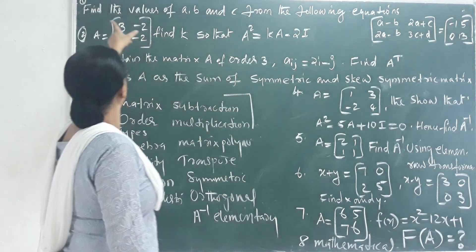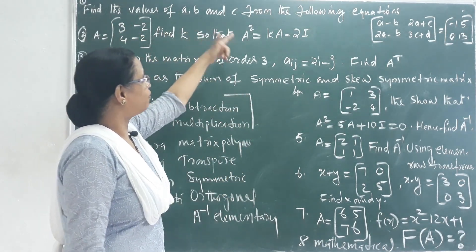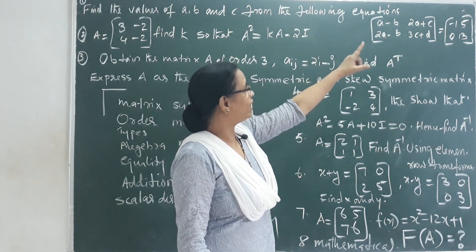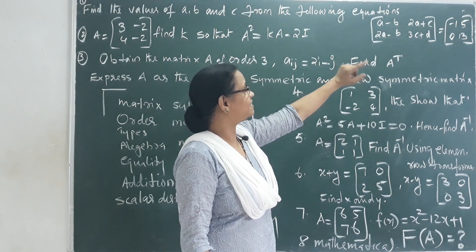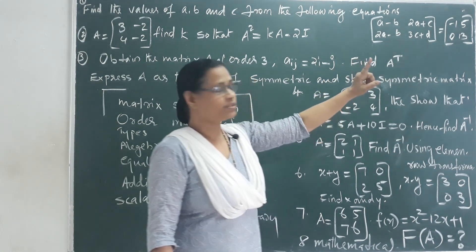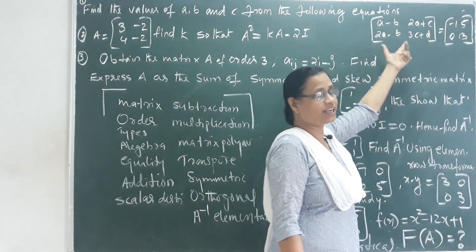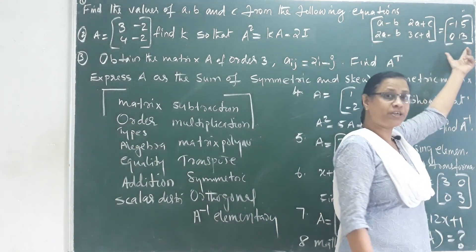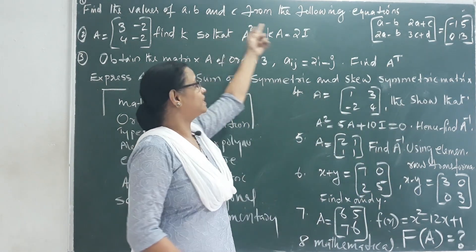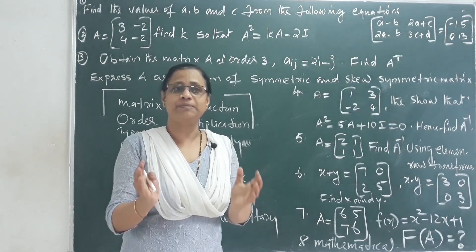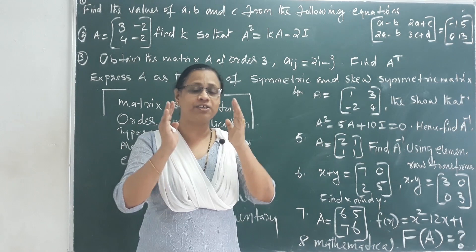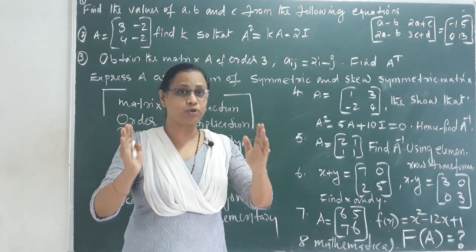First question: find the value of a, b, and c from the following equations. A minus b, 2a plus c, 2a minus b, 3c plus b — that is equal to negative 1, 5, 0, 13. That is an order-2 matrix. We need to find the values of a, b, and c using equality of matrices.